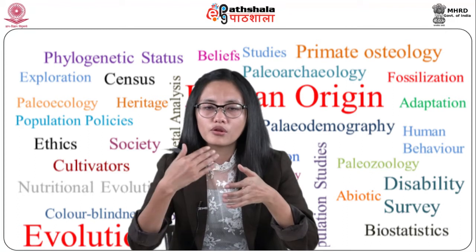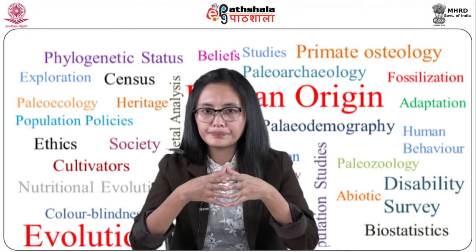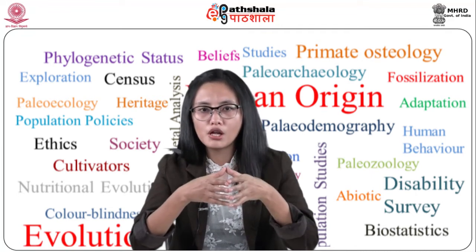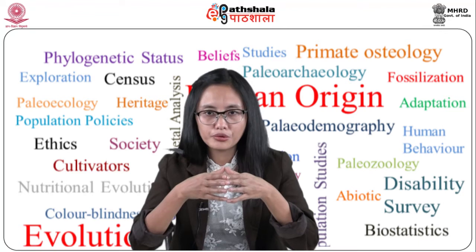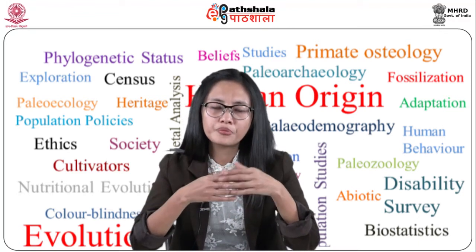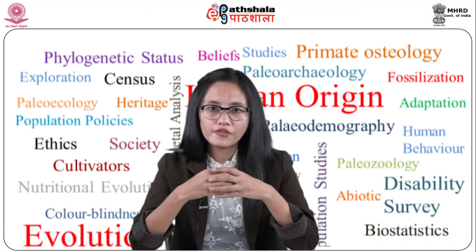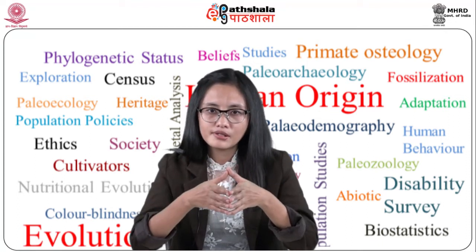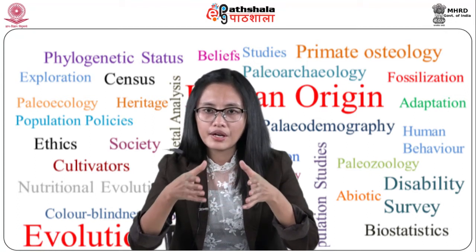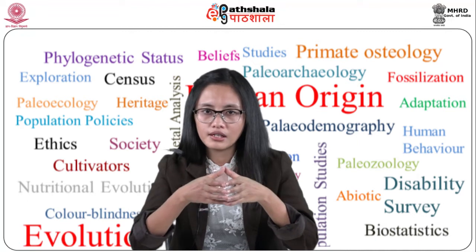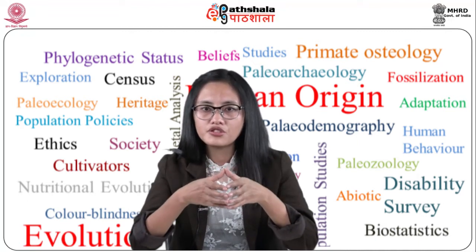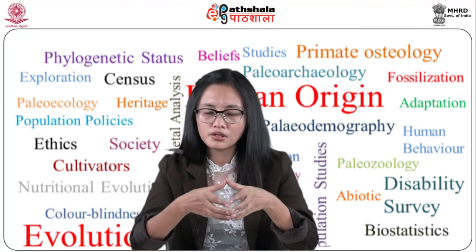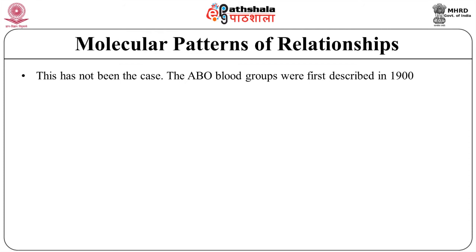Now we will talk about the molecular patterns of relationships. Genetic analysis became possible with the discovery of systems of blood groups. This work was the first to emphasize the weakness of previous racial studies. Most amounts of data now show population differences in blood group frequency. Such antigen systems directly express the genotype, which more complex traits like skin color or body height do not. It was once expected that a coherent genetic classification of the human population might emerge, but this has not been the case. The ABO blood groups were first described in 1900. They are strongly patterned over the surface of the world.